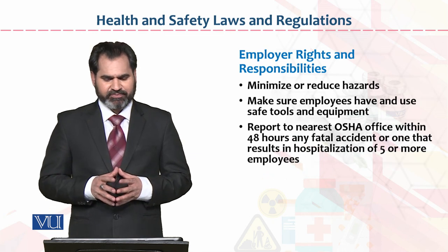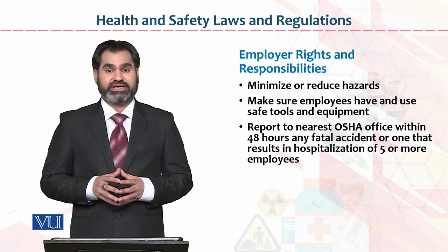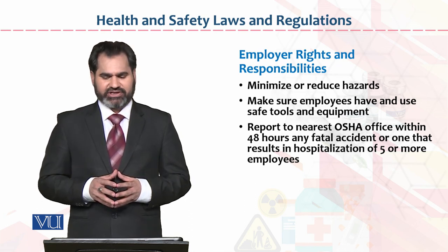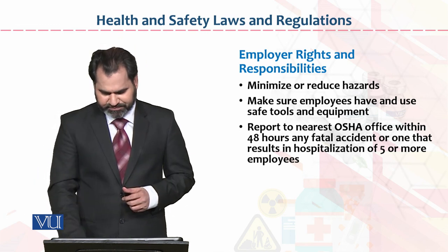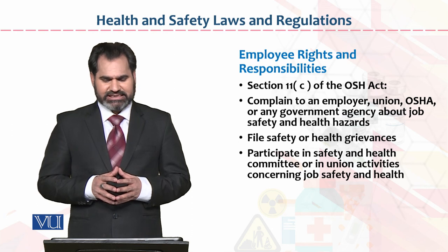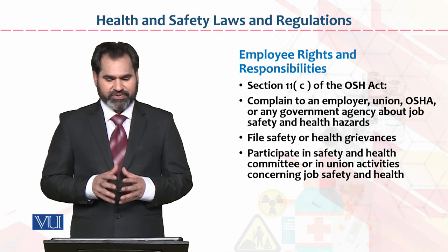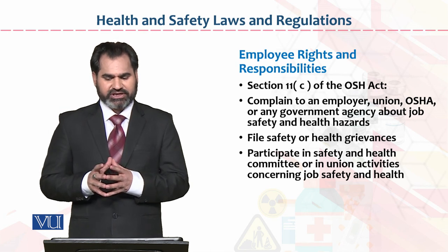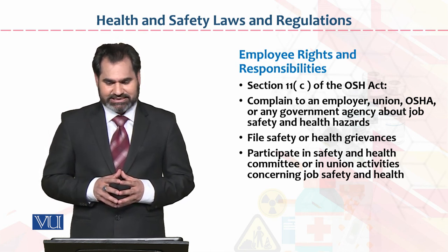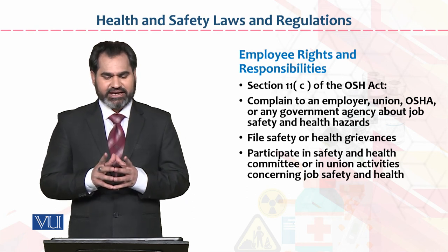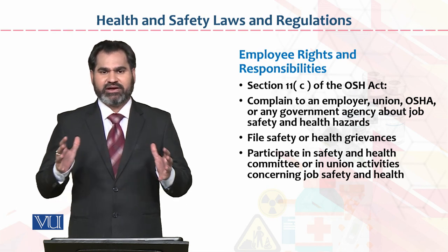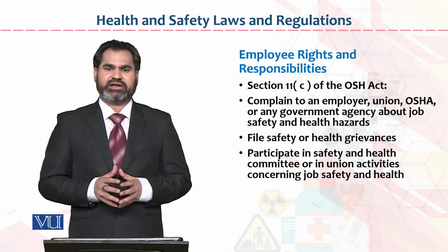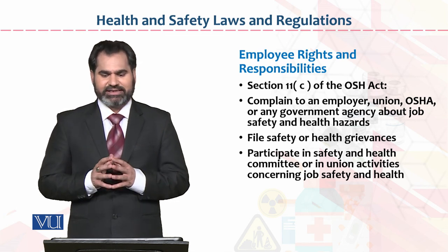Minimize or reduce hazards. Make sure employees have and use safe tools and equipment. Report to the nearest OSHA office within 48 hours any fatal accident — if any accident occurs, it is the employer's responsibility to report it to the nearest office. Section 11c of the Occupational Safety and Health Act gives the employee the right to make a complaint to an employer, union, OSHA, or any governmental agency about job safety and health hazards. This is the employee's right — if the environment is not hazard-free, they can report to the agency that their employer is not providing them rights.